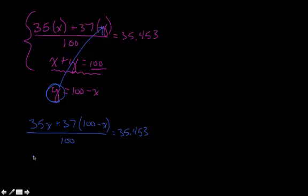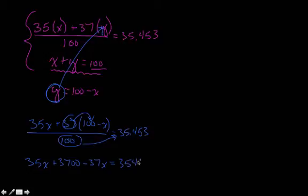So let's do that. We'll distribute this 37 into everything in the parentheses, and at the same time, we'll also take this 100 and move it over to the other side by multiplying both sides of the equation by 100.